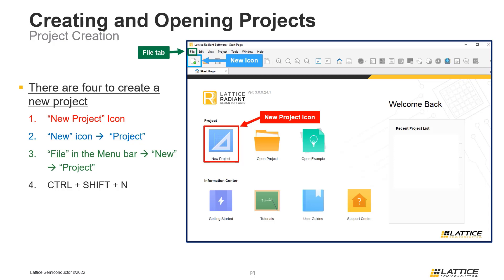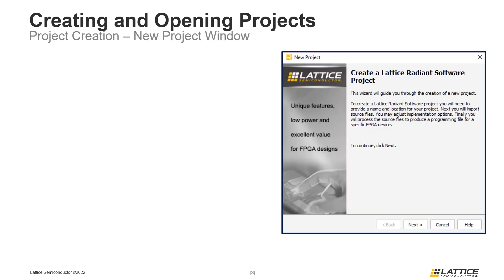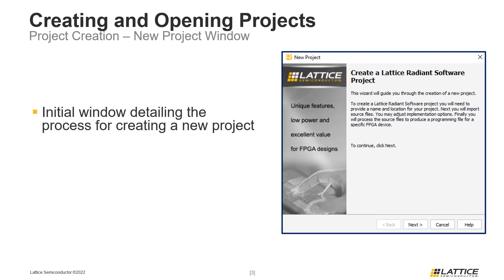The process for setting up a new project in Radiant is the same regardless of the method used to create it. The first page users will see in the new project wizard is the New Project page, which details what the wizard is used for. There are no selections to make here, so users should click Next whenever they are ready to continue.